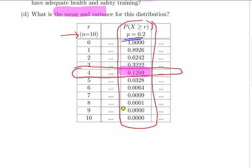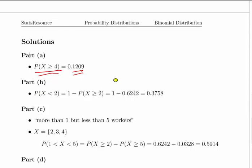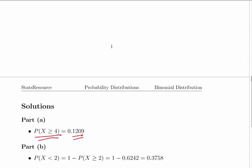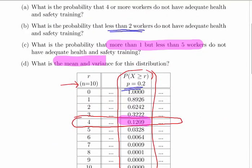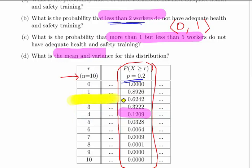The next question is: what is the probability of less than 2? Less than 2 means either 0 or 1. Now, this table gives us the probability of 2 or more. If we go to that row there, that's the probability of 2 or more—so 2, 3, 4, 5, 6, all the way up to 10.